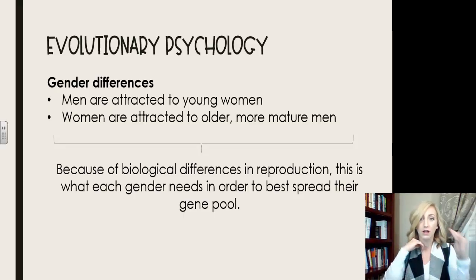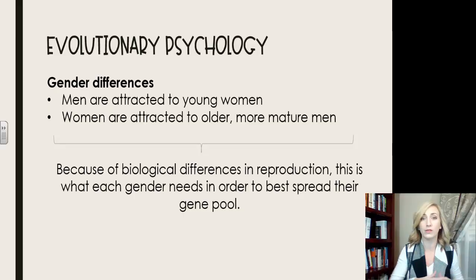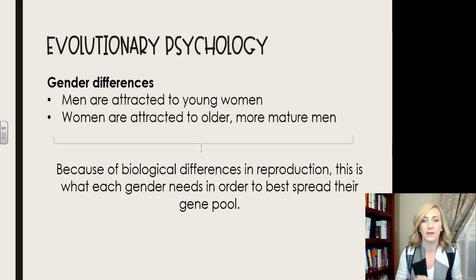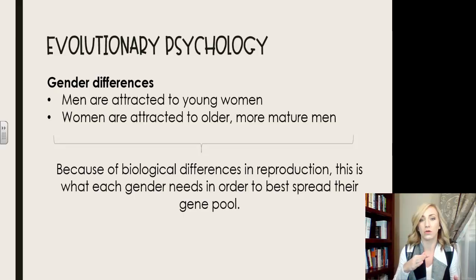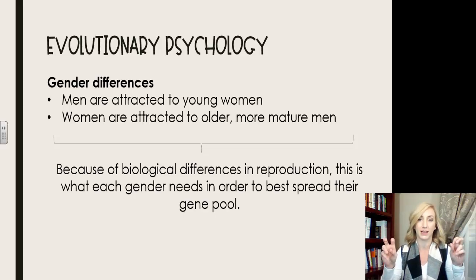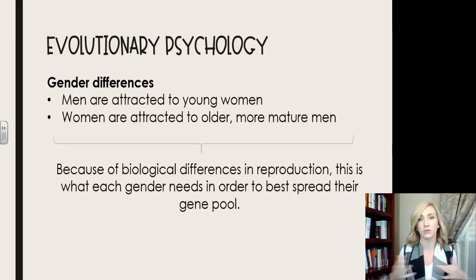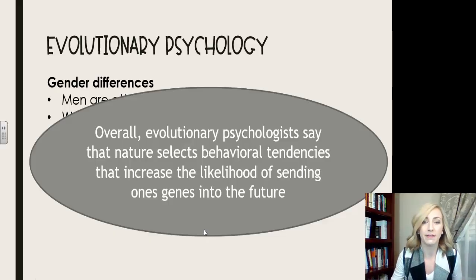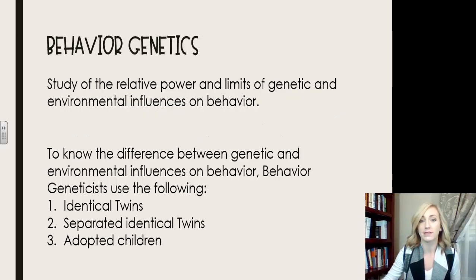It's important to discuss gender differences here. Men are attracted to young, fertile women because it doesn't take much for a man to reproduce far and wide. Whereas women, reproduction takes much more, so they want to find a mate that's older, more mature, and more likely to have the 'stay factor' — her offspring are more likely to be successful if she has someone helping. Overall, evolutionary psychologists say nature selects behavioral tendencies that increase the likelihood of sending one's genes into the future.